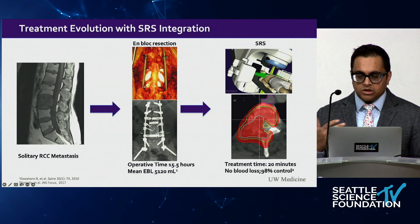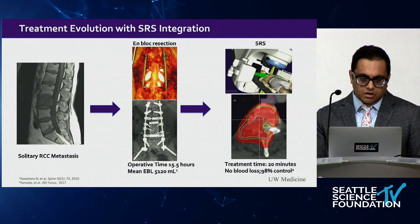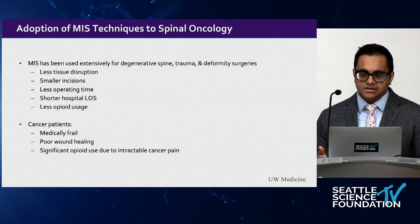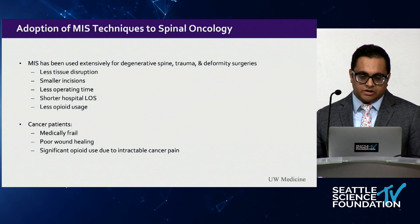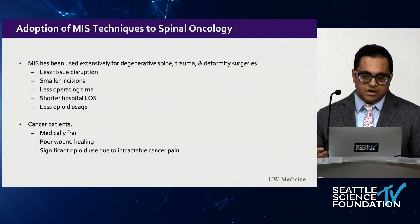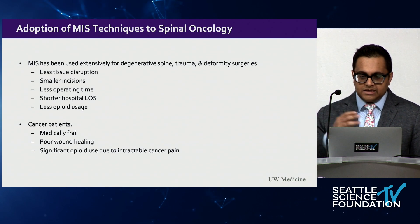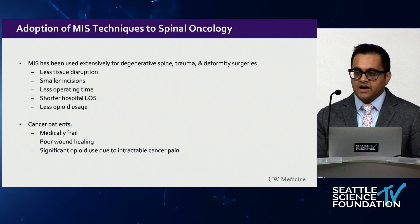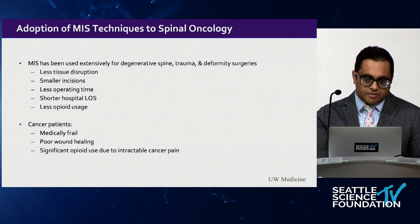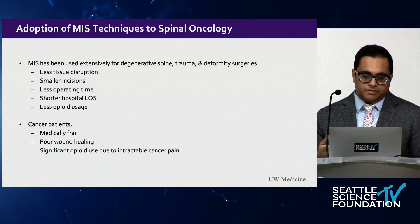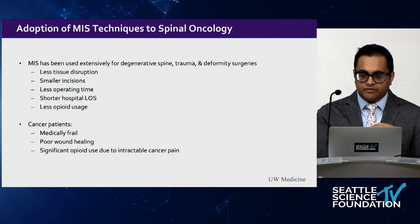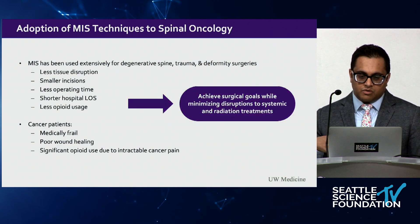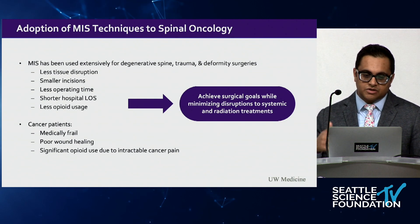We are all very familiar with minimally invasive spine surgery techniques in the degenerative spine population, trauma, and sometimes deformities. The benefits are clear: less tissue disruption, smaller incisions, potentially less operating time, shorter hospital stays, and less opioid usage. These advantages are exemplified in cancer patients, who are very medically frail with poor wound healing due to chemotherapy and often on significant opioids for intractable cancer pain. By adopting MIS techniques from the degenerative population and bringing them to the oncology patient, you can achieve surgical goals while minimizing disruptions to systemic medications and radiation treatments.